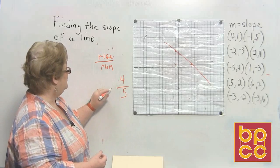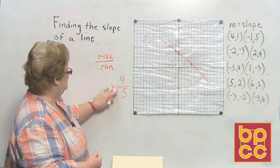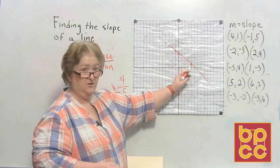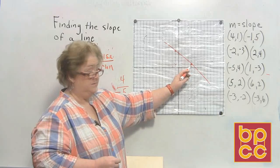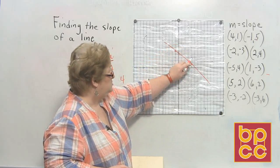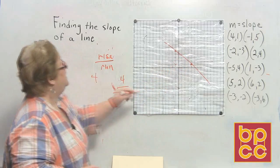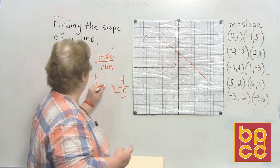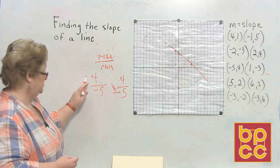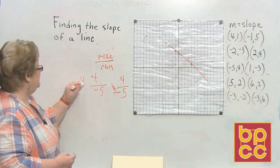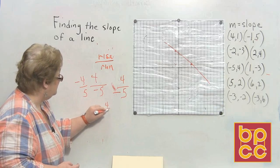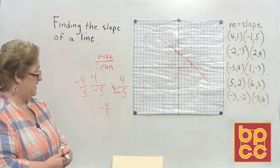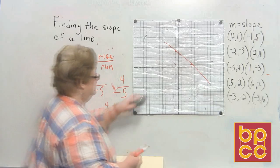Keep in mind I could have started from the other point. Going up and down first — up four, then to the left five, which is negative. So it doesn't matter if it's four over a negative five, or a negative four over five, or written with a negative in the middle. That negative in the middle says one of them is negative — pick which one you want. Let's try to graph the next one and find the slope.